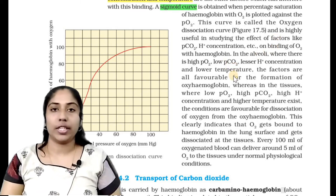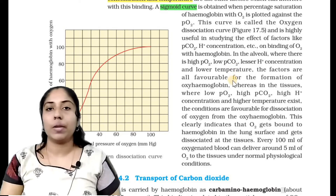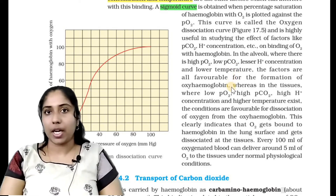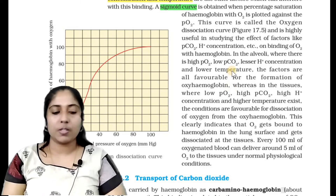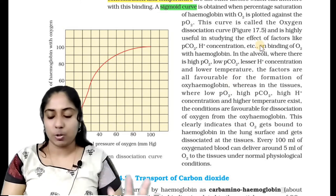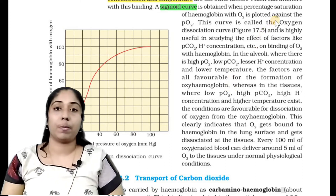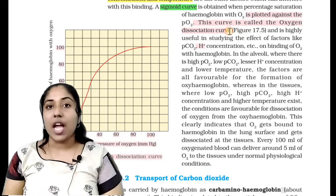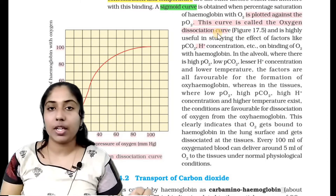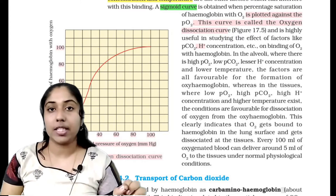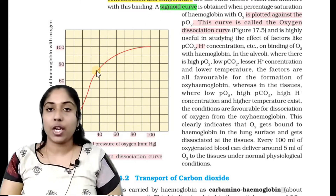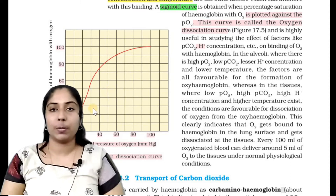When we plot hemoglobin percentage saturation against oxygen partial pressure, the graph we get is called a sigmoid curve.